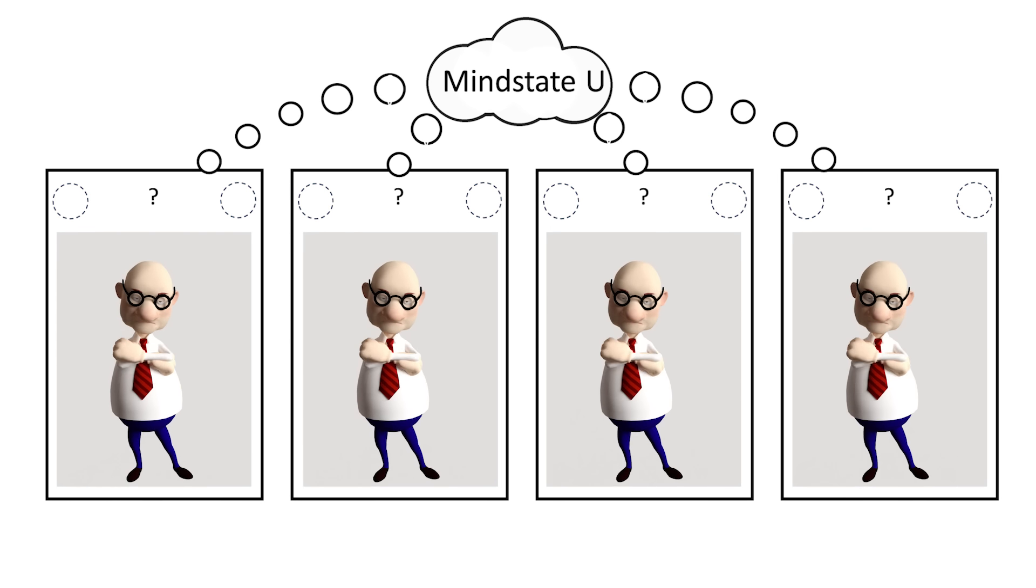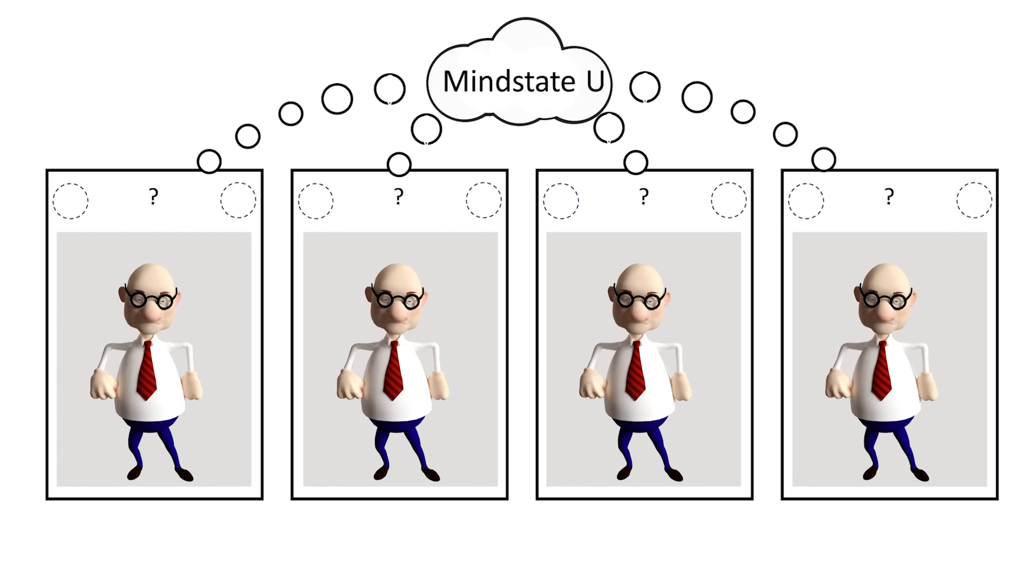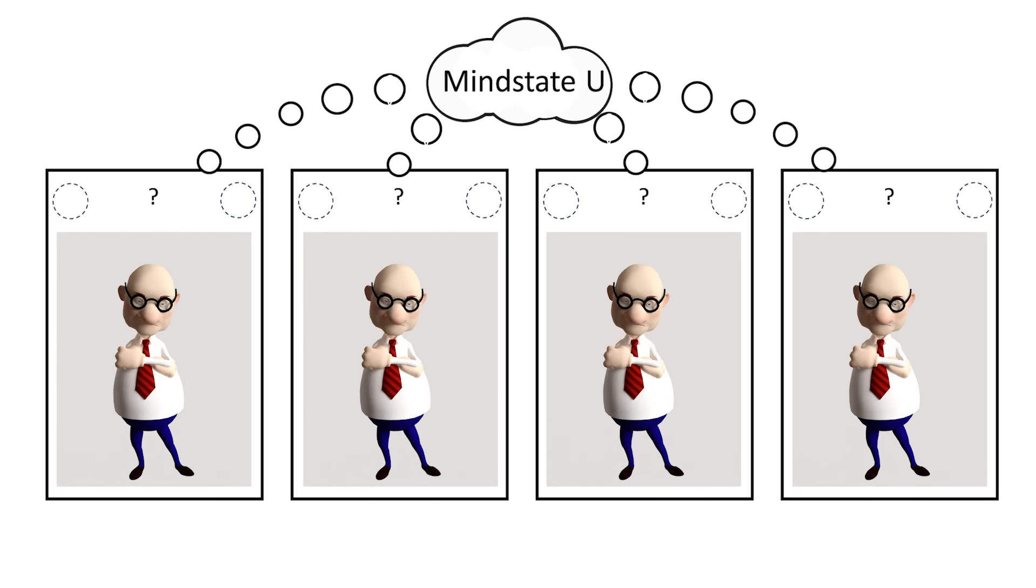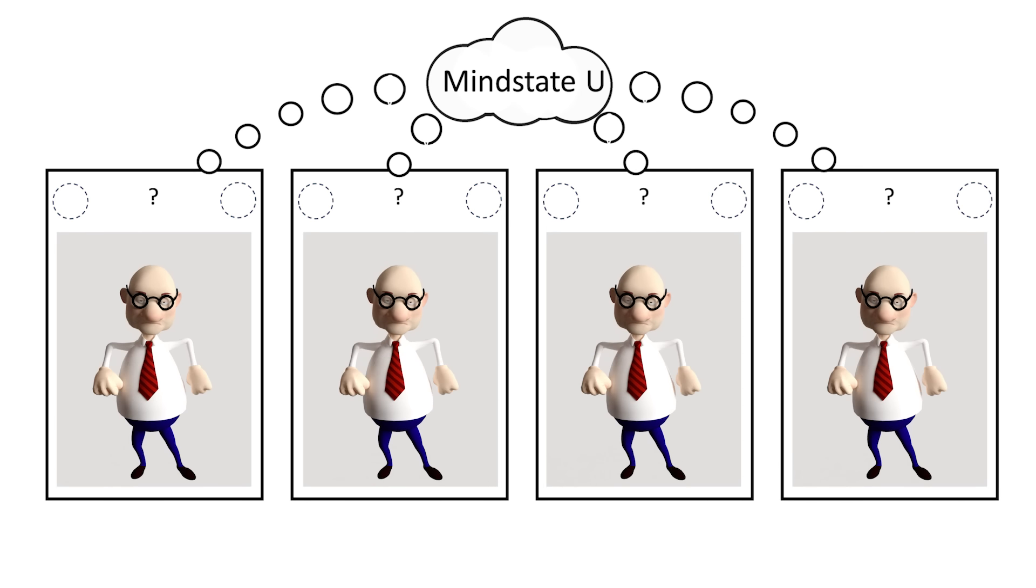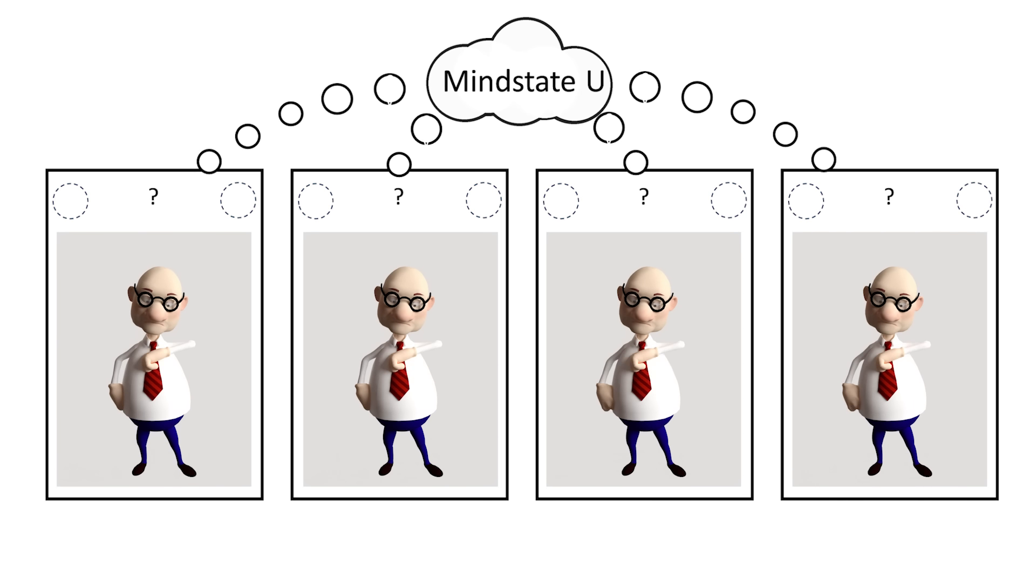In each timeline there are copies of observers. The world is deterministic, so the observers can run in perfect synchronization with each other and when they do, we say that they share the same mind state.